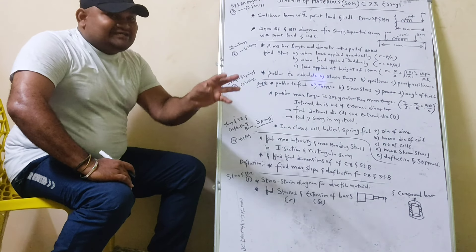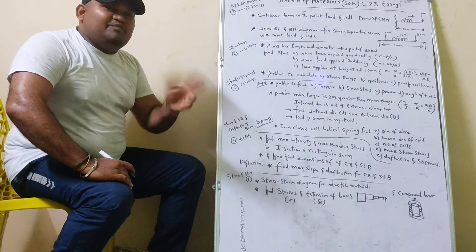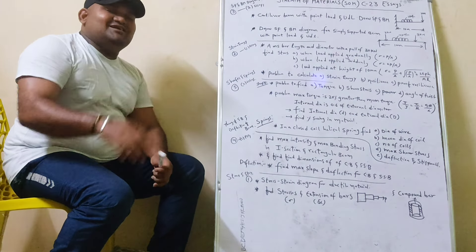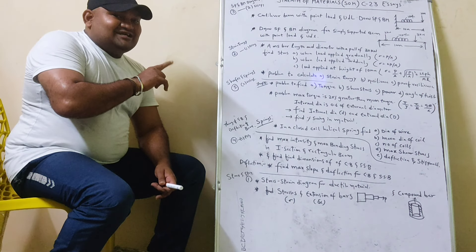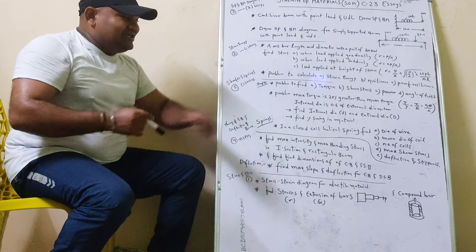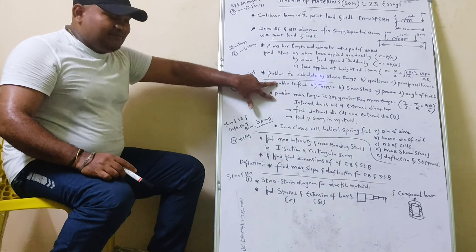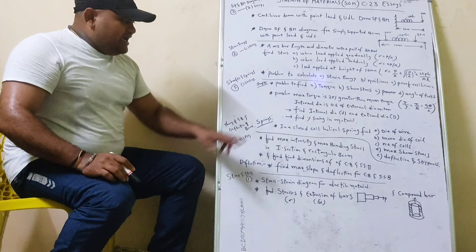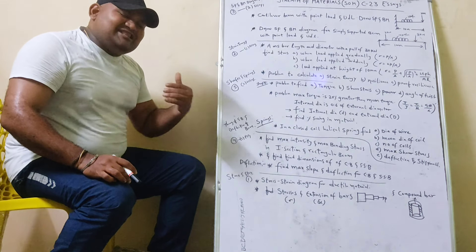Maximum torque is 20% greater than mean torque and internal diameter is 0.6 of external diameter of relations. T maximum is equal to 1.2 T mean. That is a relation. These two sums are bigger. Next, springs.